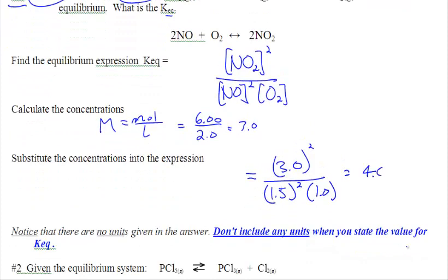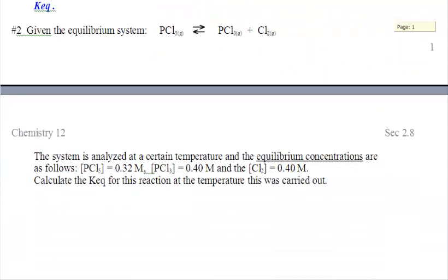We get a value of 4.0. There are no units for KEQ. This is simply a number to know how far it has shifted to the right. Remember, a large number means you've made a lot of products, and a smaller number, or less than one, you've made more reactants. Why don't you give this next one a shot and see what you get.